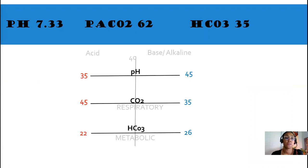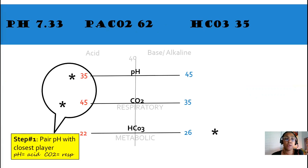Let's try it again. Here's our next ABG. pH 7.33. CO2 is 62. Bicarb, 35. Let's plot the numbers. CO2, 62. And bicarb is 35. Step number one. Pair the pH with the closest player. In this case, again, it's CO2 or respiratory.